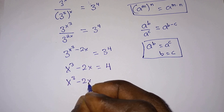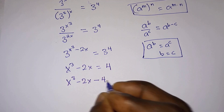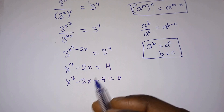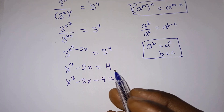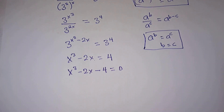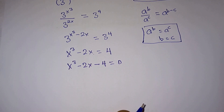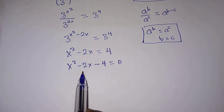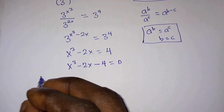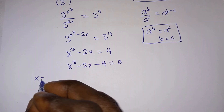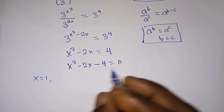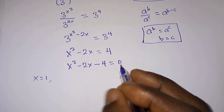Now we have a cubic equation. Let's equate everything to zero — we subtract 4 from each side — giving x cubed minus 2x minus 4 equals 0. To solve this cubic, let's test values of x to find a factor. Let's try x equals 1.